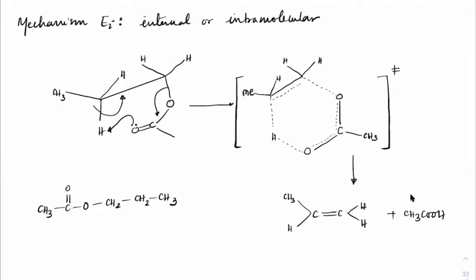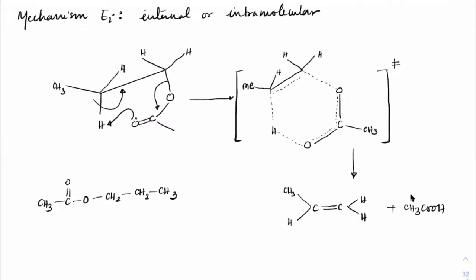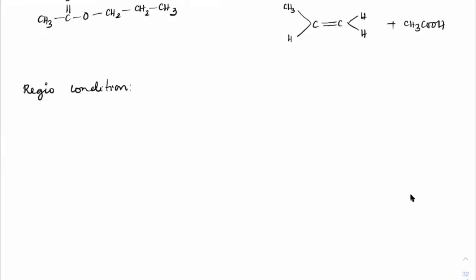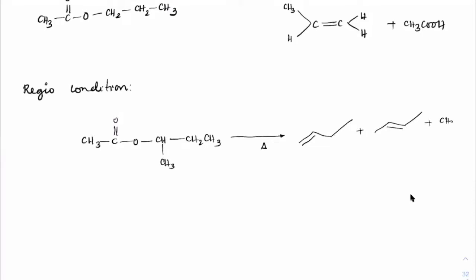If there are two types of alpha carbons available, is this reaction regioselective? For example, if we heat CH₃C(=O)O–CH(CH₃)–CH₂–CH₃, we get two alkene molecules (each also with cis/trans isomers) plus CH₃COOH. The major product is the Hofmann product — the less substituted alkene.